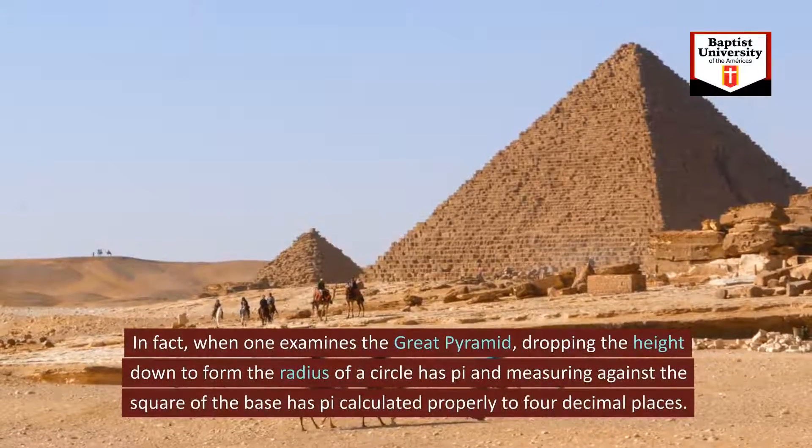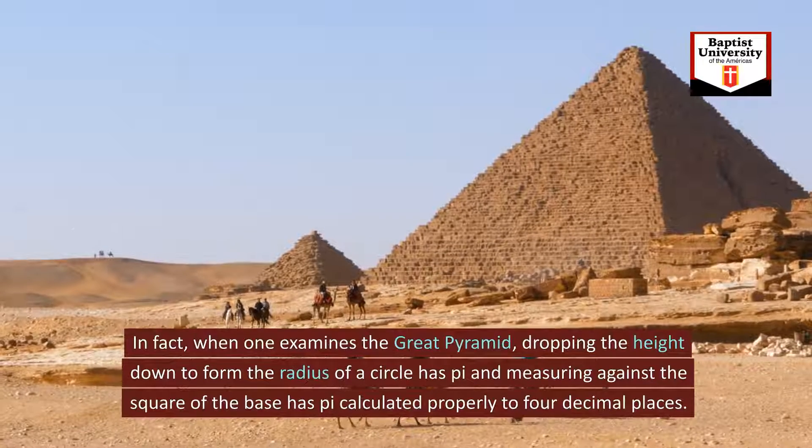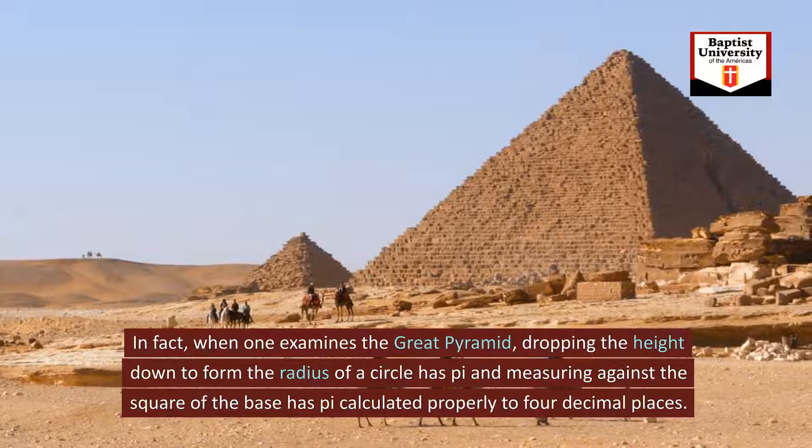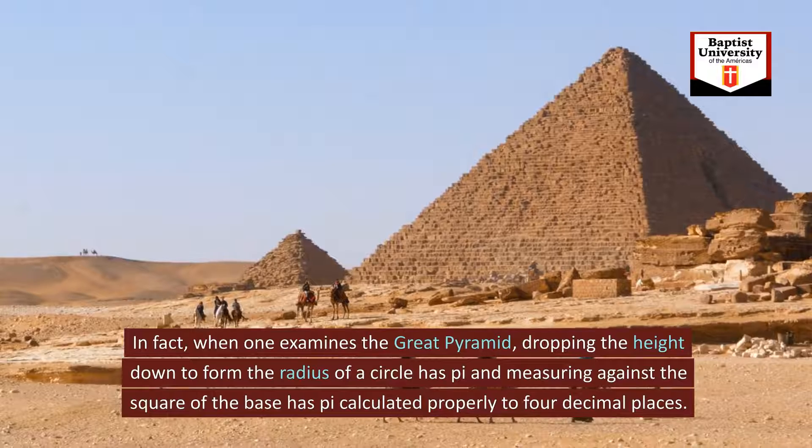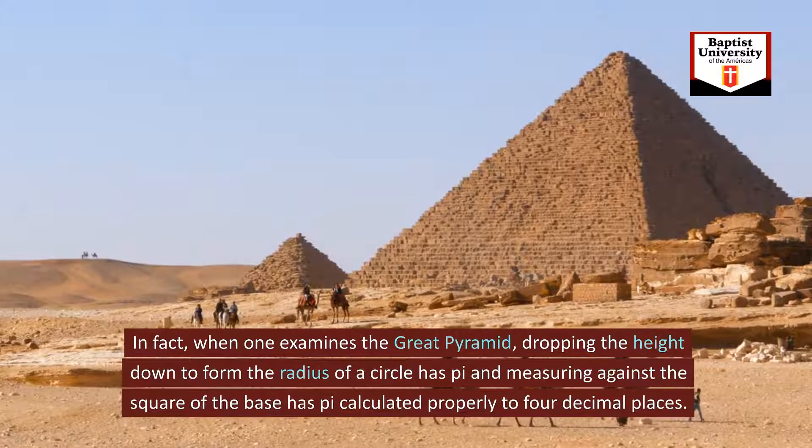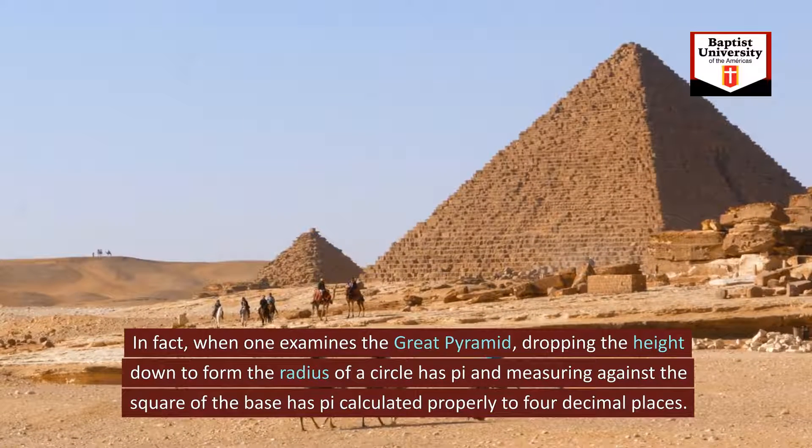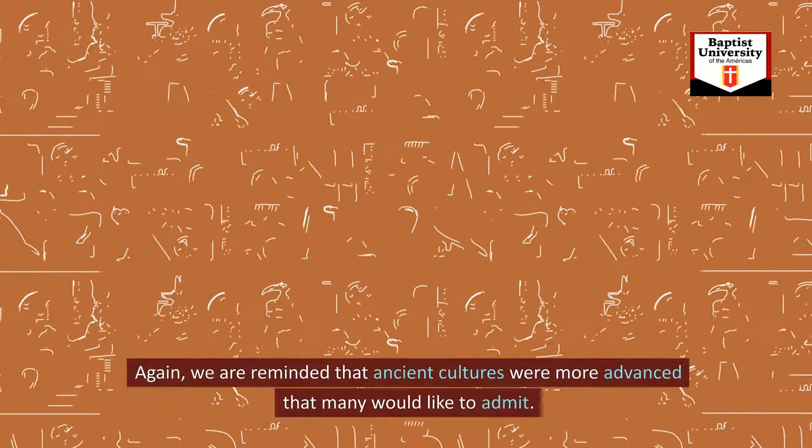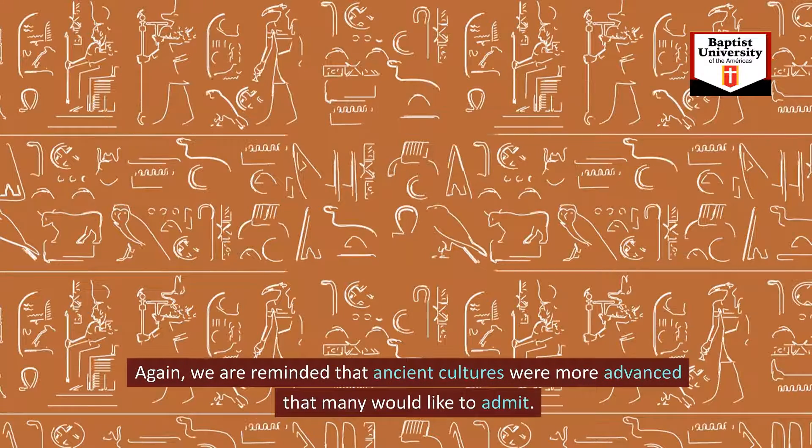In fact, when one examines the Great Pyramid, dropping the height down to form the radius of a circle and measuring against the square of the base has pi calculated properly to four decimal places. Again, we are reminded that ancient cultures were more advanced than many would like to admit.